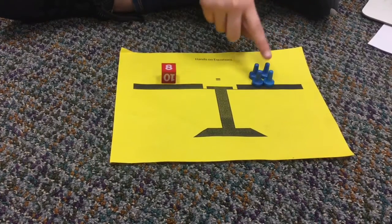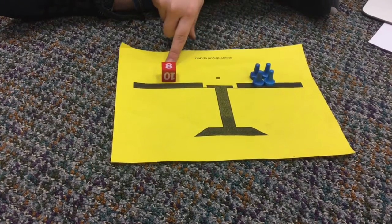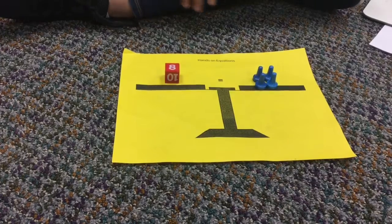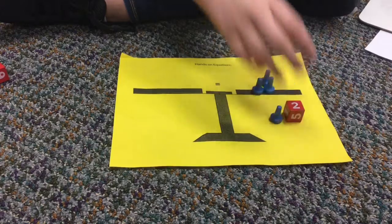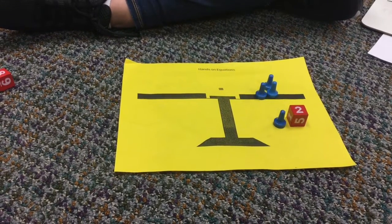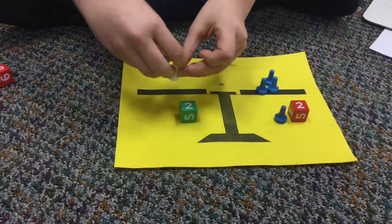And so we have 4 blue pawns and 1 8. And so then our answer would be x equals 2. And the opposite of x equals negative 2.